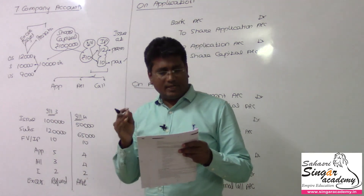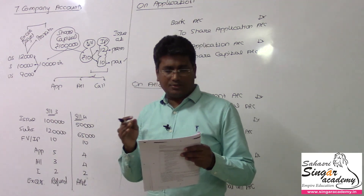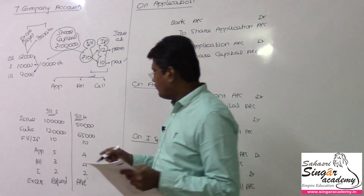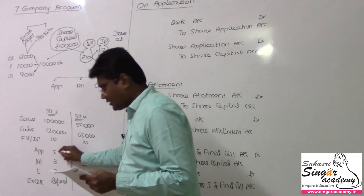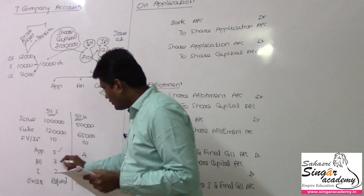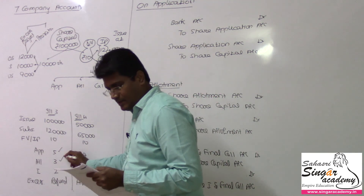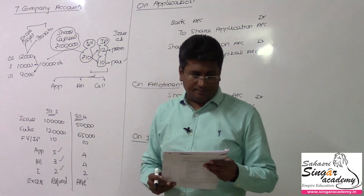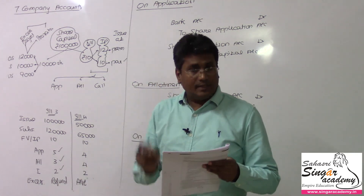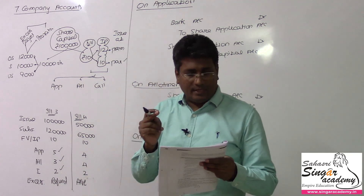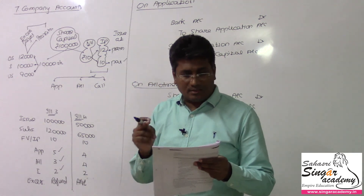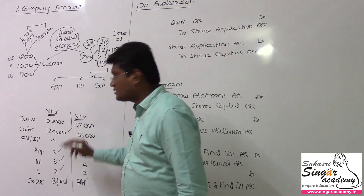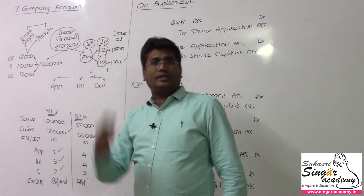The details of the amount payable on the shares are as follows: 5 rupees on application, 3 rupees on allotment, and 2 rupees on first and final call. The application money was received for 1,20,000 shares — subscription is more than that.